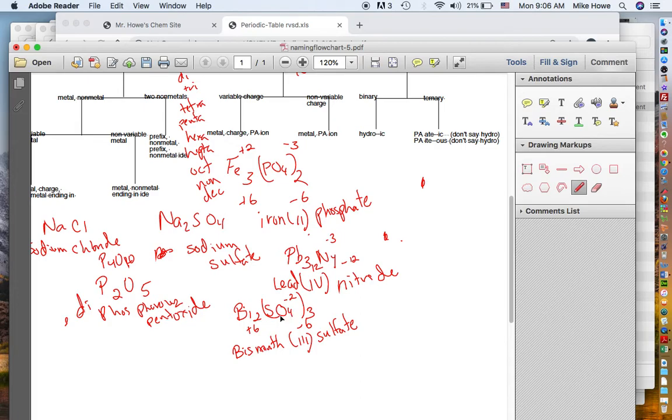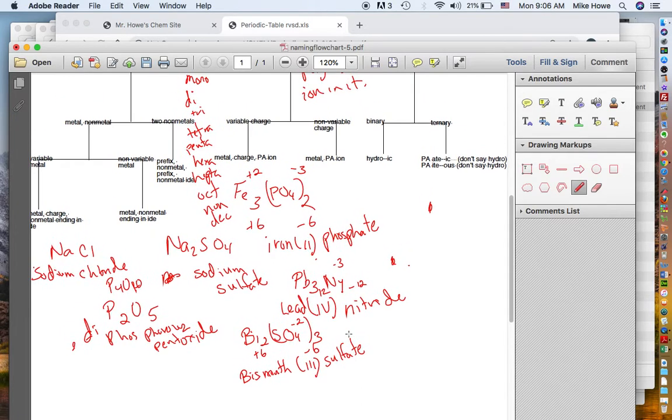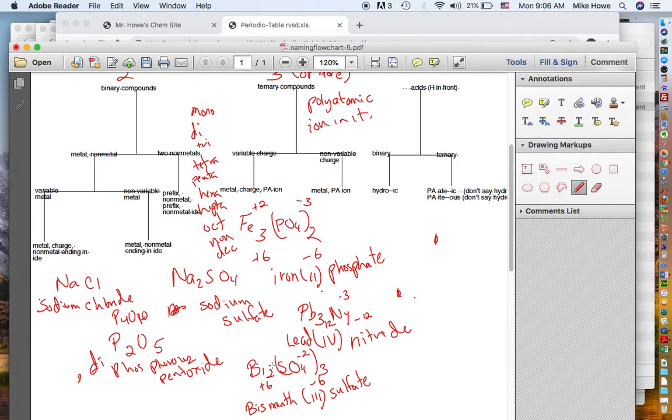Now you notice on this one, I didn't go through the flowchart. So let's go back and go through the flowchart. There are three elements, so we're looking at the ternary. The first element is bismuth. It's variable. So you had to go down here and say the metal, the charge, and the polyatomic ion.